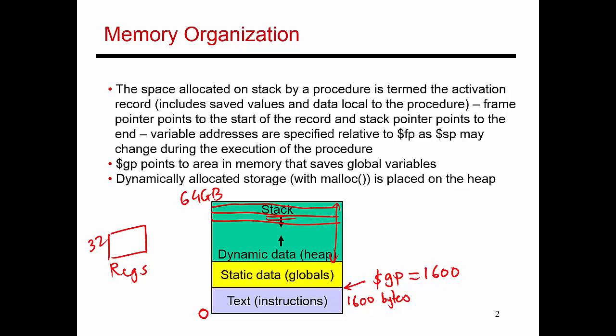If function main now calls some other function, its variables then start getting defined on top of the stack over here. Once that function finishes, its variables get deallocated from the stack, and so on. So the stack keeps moving up and down based on the functions that get called and the variables that are defined inside those functions.